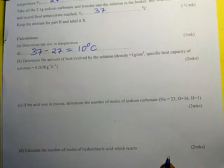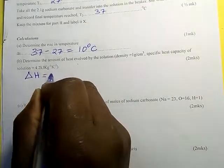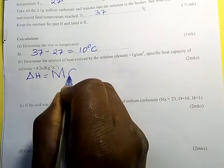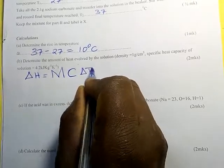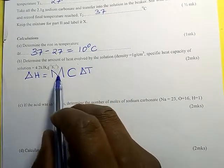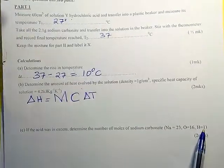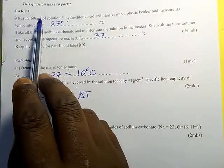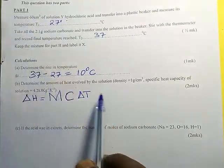The heat change is calculated as: Q = mass × specific heat capacity × temperature change. Where students get a lot of problems is with this mass — the mass of the solution that was used. For example, here we were told to measure 60 cm³, so we are going to calculate the mass of that solution.